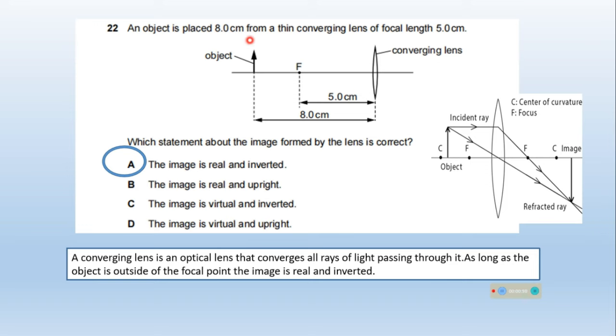An object is placed 8 cm from a thin converging lens of focal length 5 cm. Which statement about the image formed by the lens is correct? A converging lens converts all rays of light passing through, as long as the object is outside of the focal point. Here the object is placed outside the focal point, so the image is real and inverted. Option A is correct.